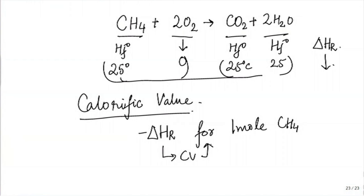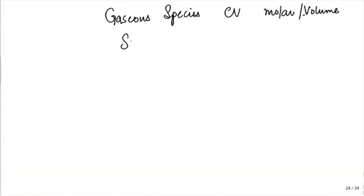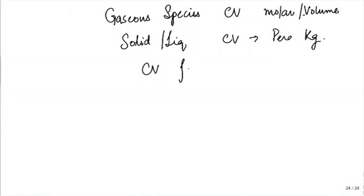1 mole of CH4 is 12 grams of carbon plus 4 grams of hydrogen, so 16 grams total. If this much energy was released for 16 grams, I can calculate energy released per kilogram to get calorific value on a per-kg basis. For gaseous species, CV is often expressed on a molar or volume basis, whereas for solid or liquid fuels it is expressed on a per-kg basis — for example, CV for 1 kg of carbon.